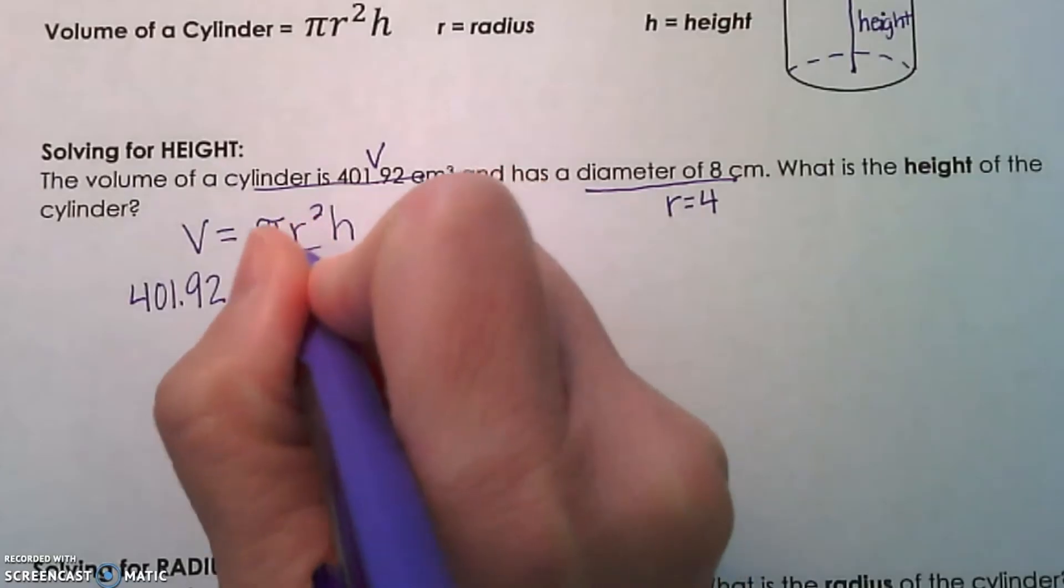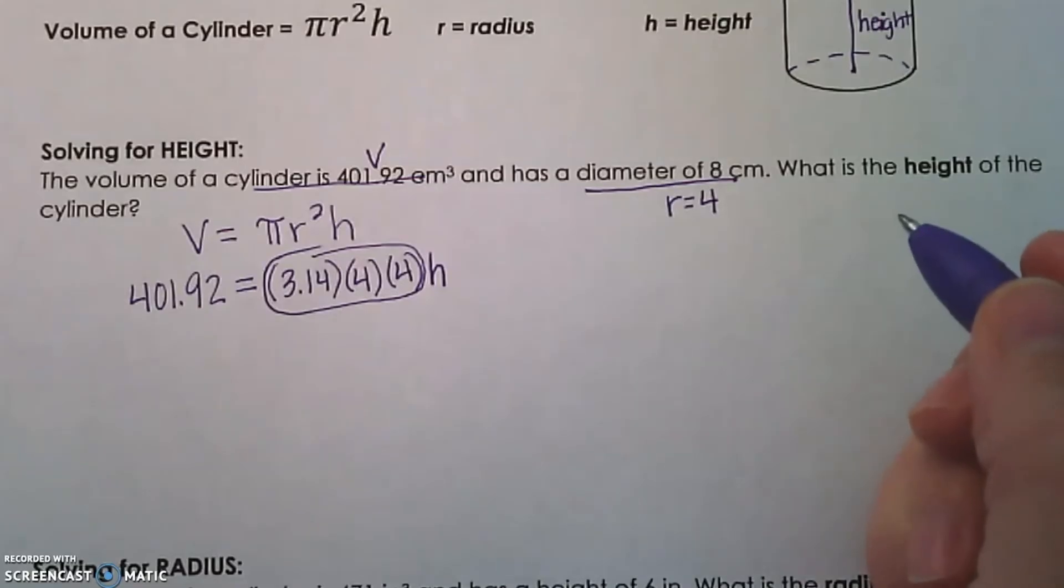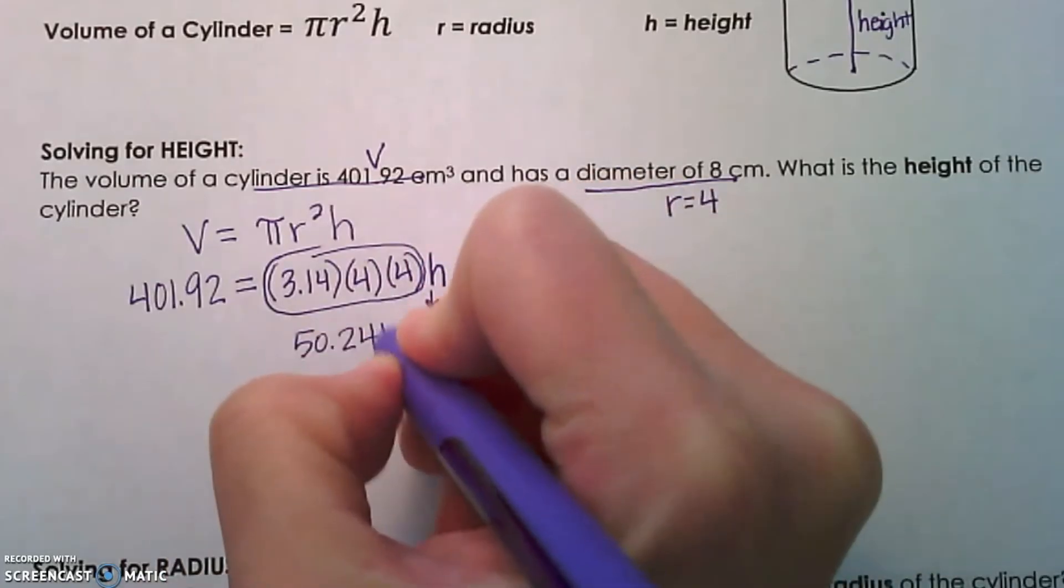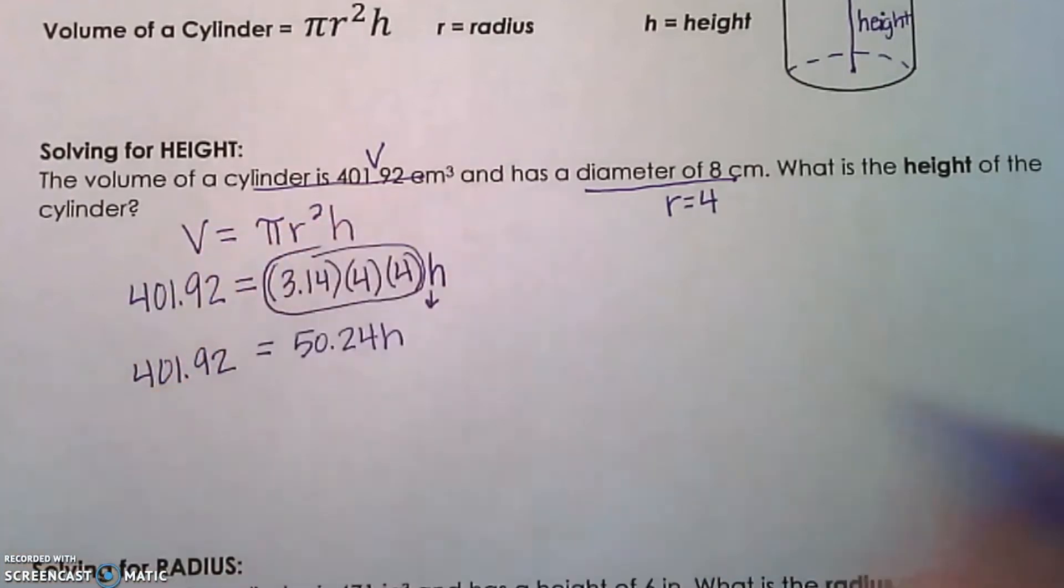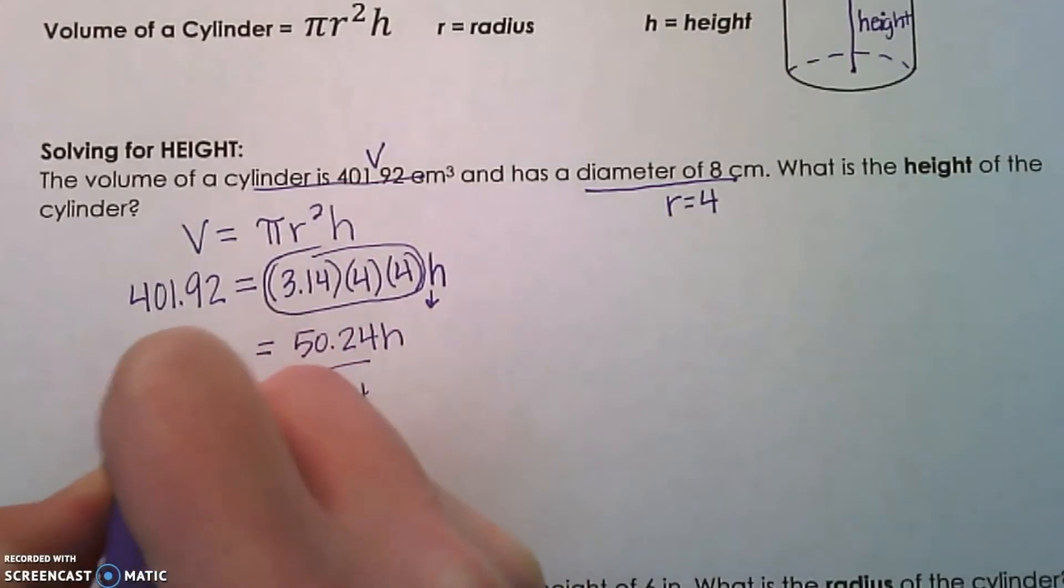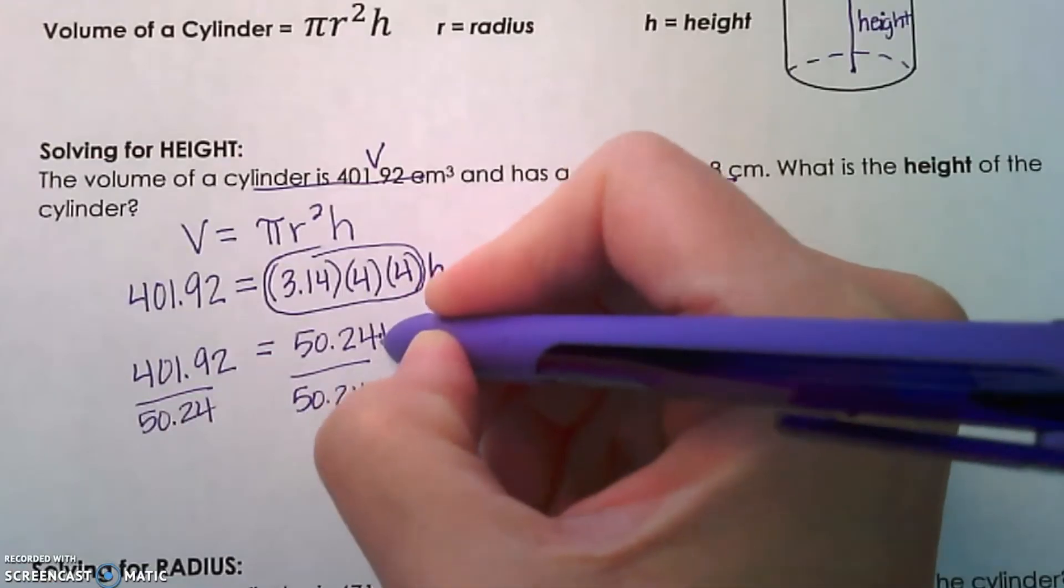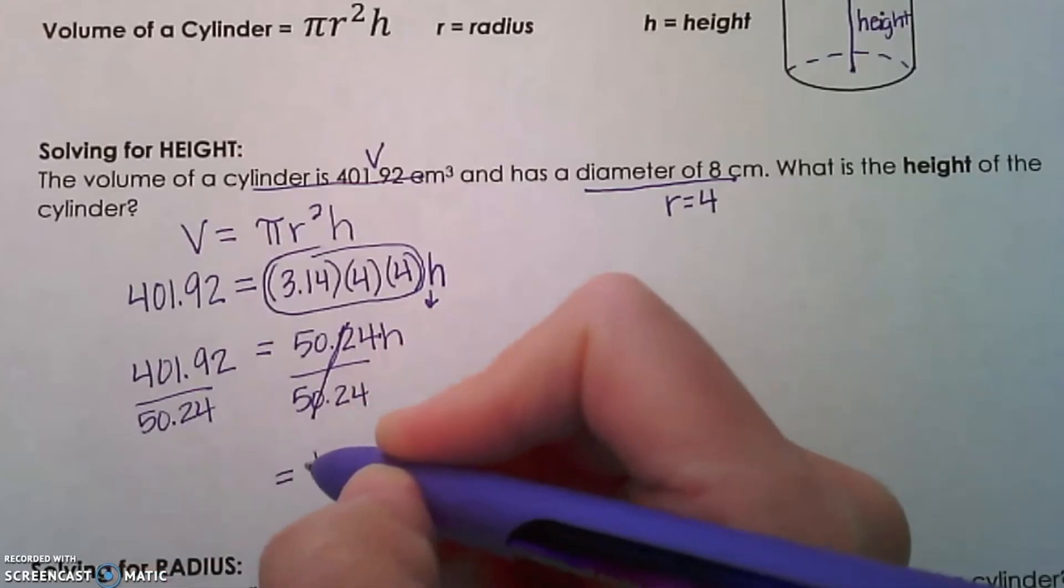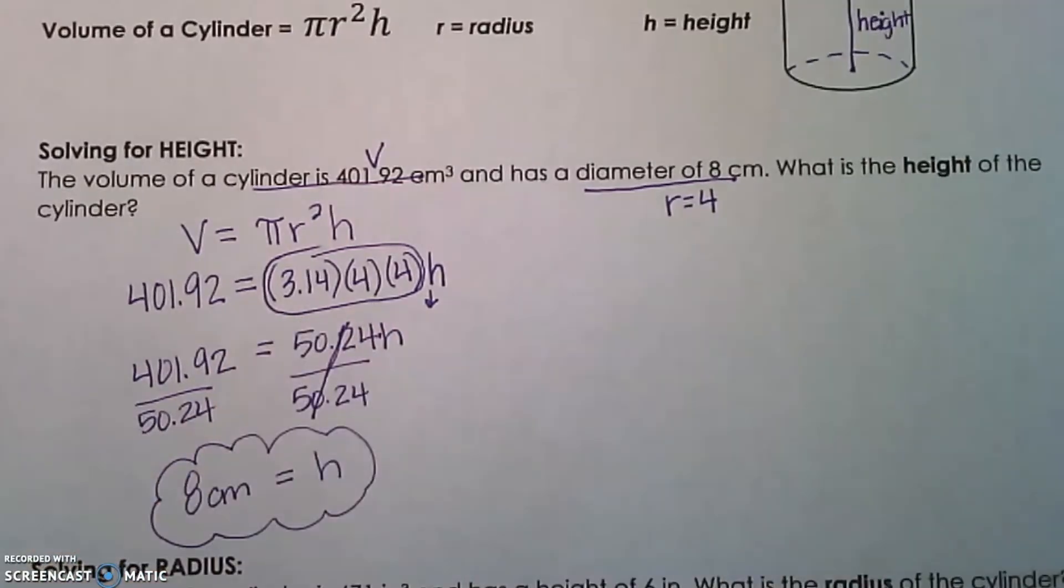Our next step is going to be to multiply π times radius squared with our calculators. So when we plug those numbers into our calculator, we get 50.24 times h. We're just one step closer to solving for it. Now we're going to divide both sides by 50.24. That's our inverse operation, because 50.24 times height, the inverse of multiplying would be dividing. Those 50.24s are going to cancel out and we get that our height is equal to 8 centimeters. That measurement is going to be the units of measure are just centimeters.